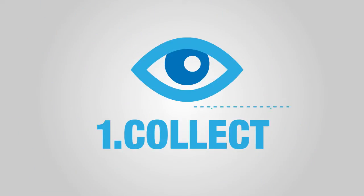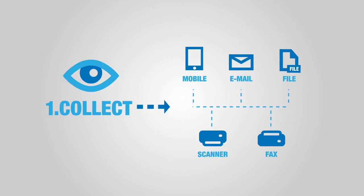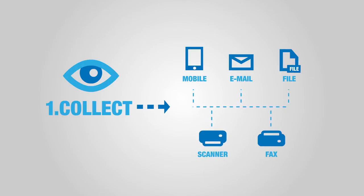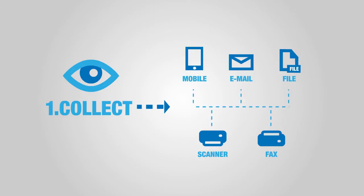Step 1: Collect. eFlow DMR imports white mail from one central or many distributed scanners, as well as from fax, email, mobile, and other electronic transaction sources.